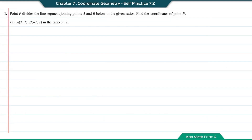Practice 7.2, question number 1. Point P divides the line segment joining point A and B in the given ratios. Find the coordinates of point P.